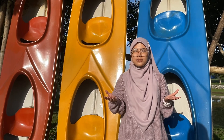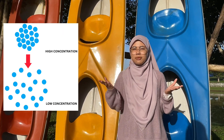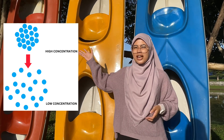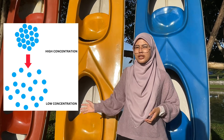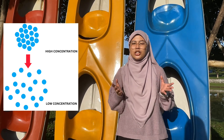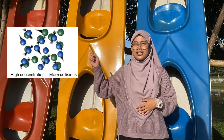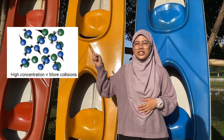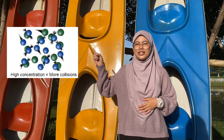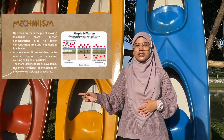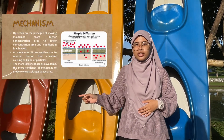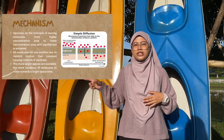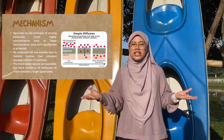Simple Diffusion operates under the principle of moving molecules from a higher concentration area to a lower concentration area until equilibrium is achieved. All molecules undergo random motion, causing constant collisions. The more larger spaces are available, the more tendency molecules have to move towards a larger space area.